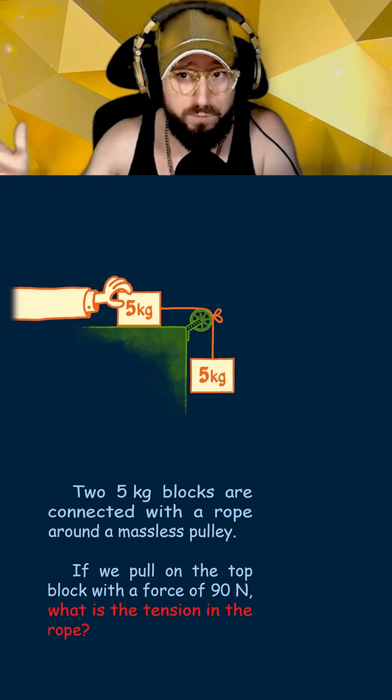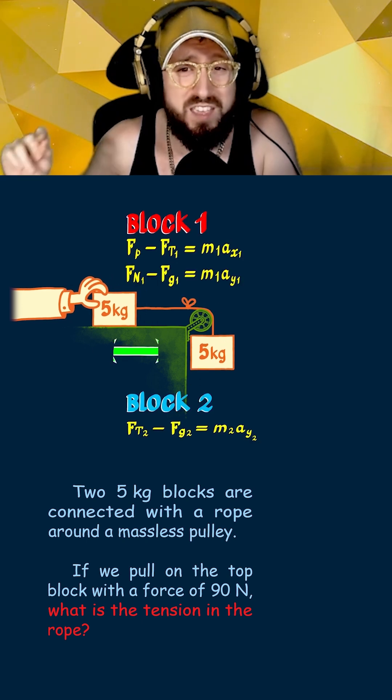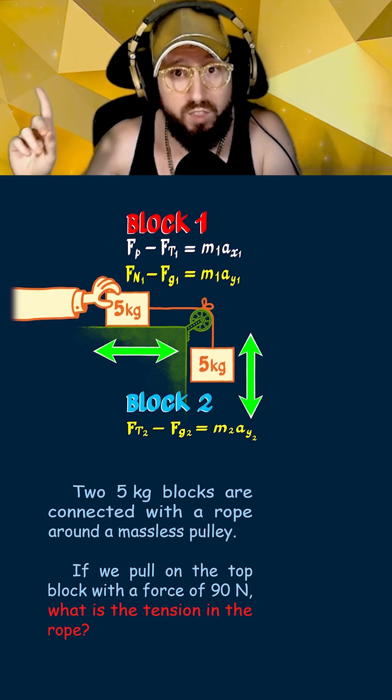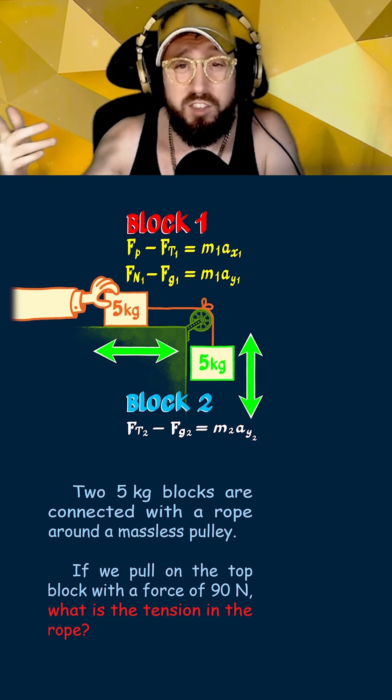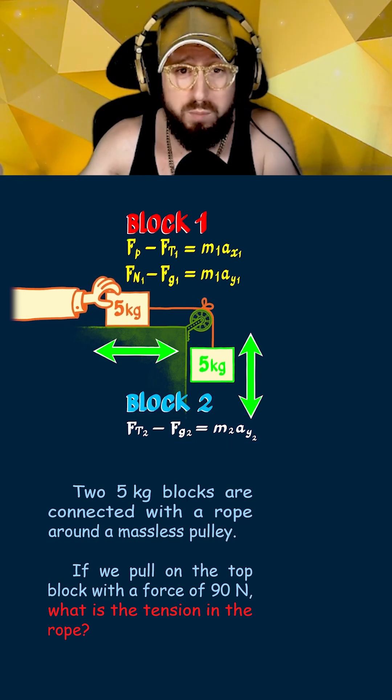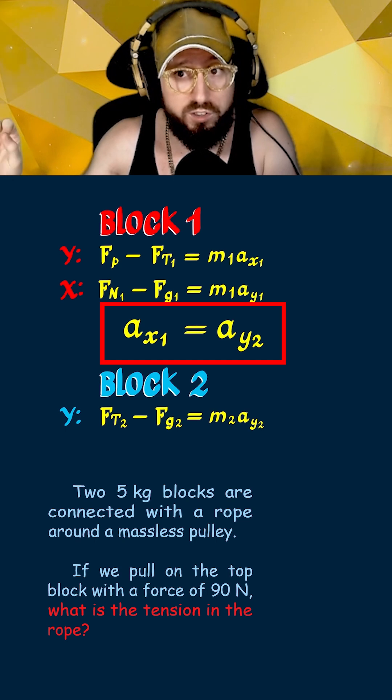Now we need to be clever using physics and notice that any movement in the x direction for the first block is the same movement in the y direction for the hanging block. This is because the blocks are connected by a rope and move together, which also means their acceleration will be the same.